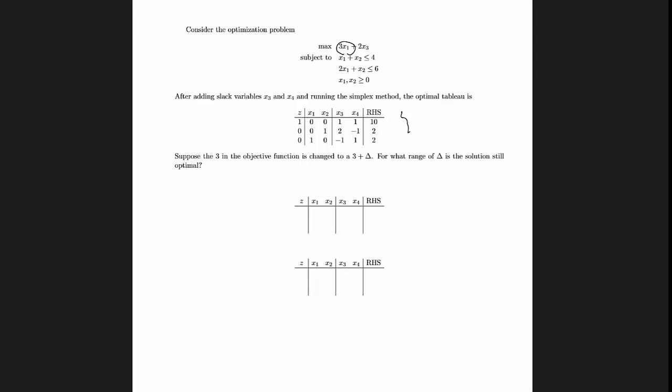Since we're only changing a coefficient in the objective function, we're not changing the feasible region at all. So if we run the same exact row operations that we did in the original problem, we should land on the same basic feasible solution. So the only question should be, is this basic feasible solution still optimal?